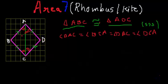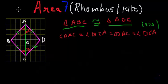Now I am going to do one more construction. I will draw the second diagonal from point B to point D. Let's assume that diagonal AC and diagonal BD intersect each other at point O. Our rhombus is now divided into four small triangles.